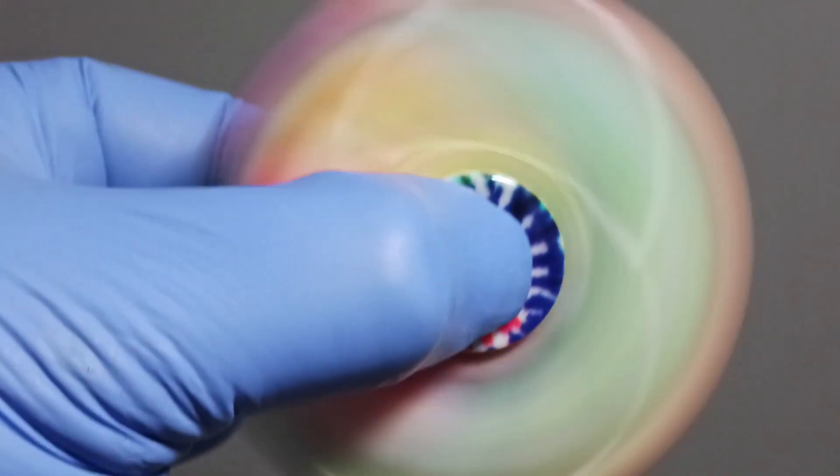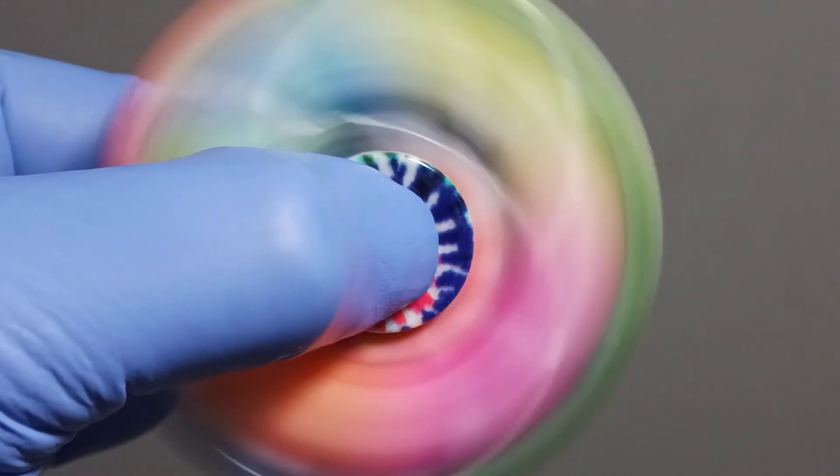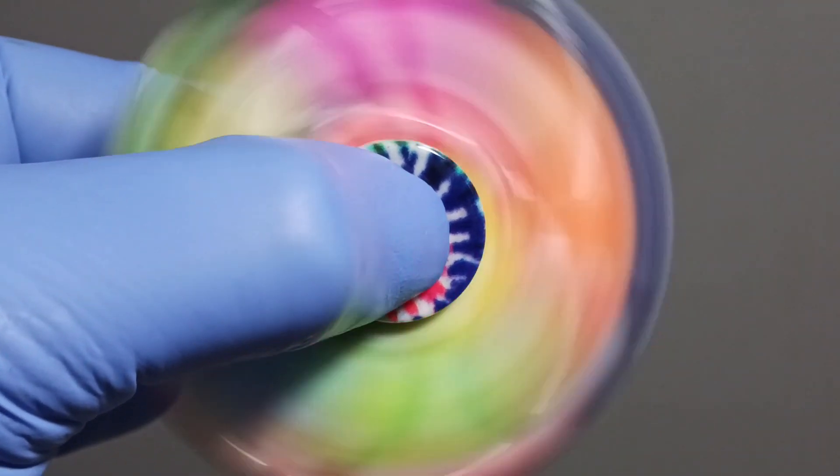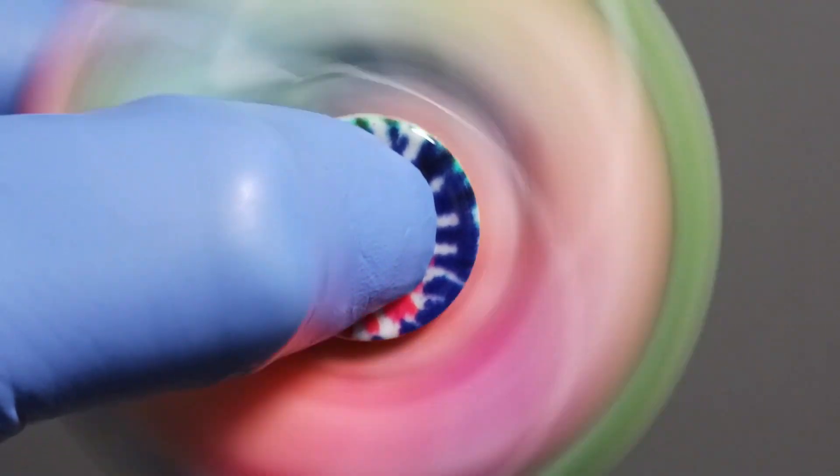When a fidget spinner is spun, its central bearing is subjected to a torque, which causes it to rotate. The torque is generated by the flick of the finger or a twist of the wrist, which imparts an initial angular velocity to the spinner.